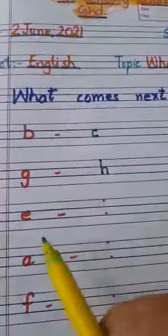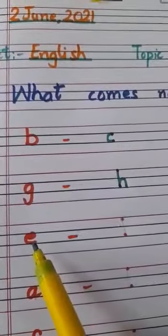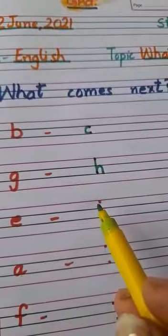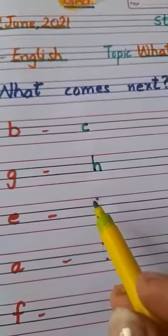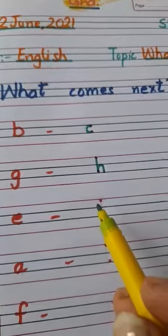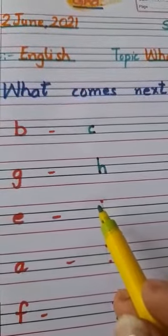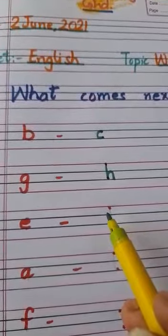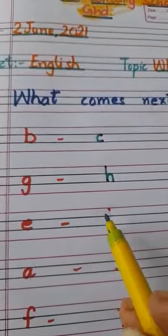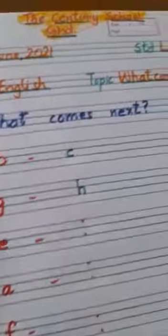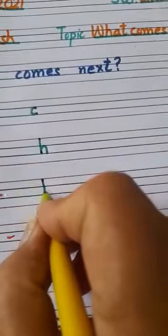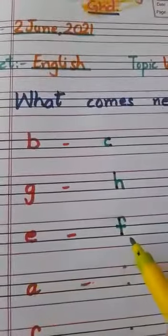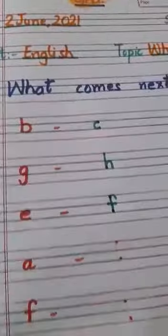Next is E. This is small letter E. What comes after E? We will speak: A, B, C, D, E, F. F comes after E. So we will write here — small letter F. E, F.